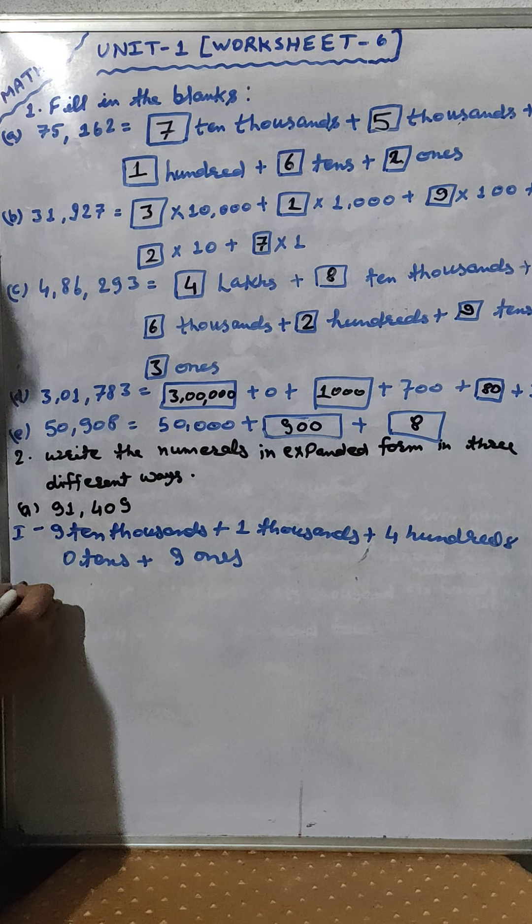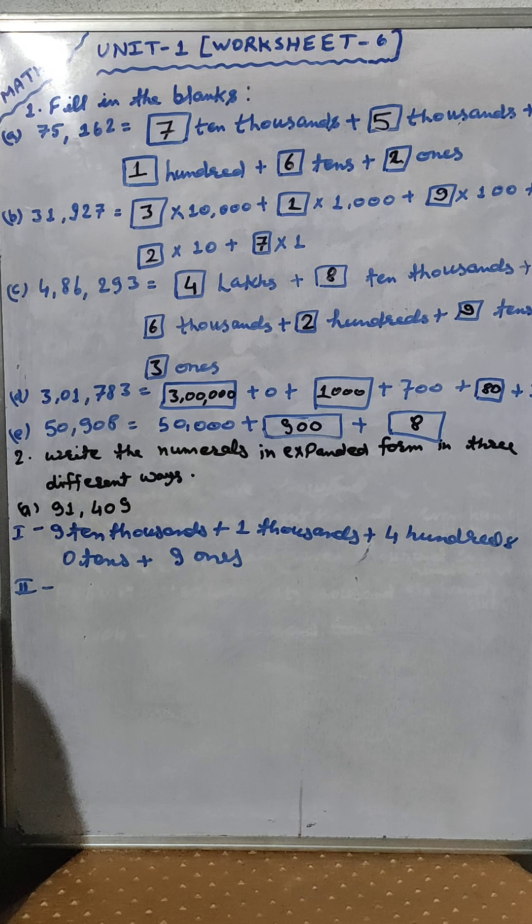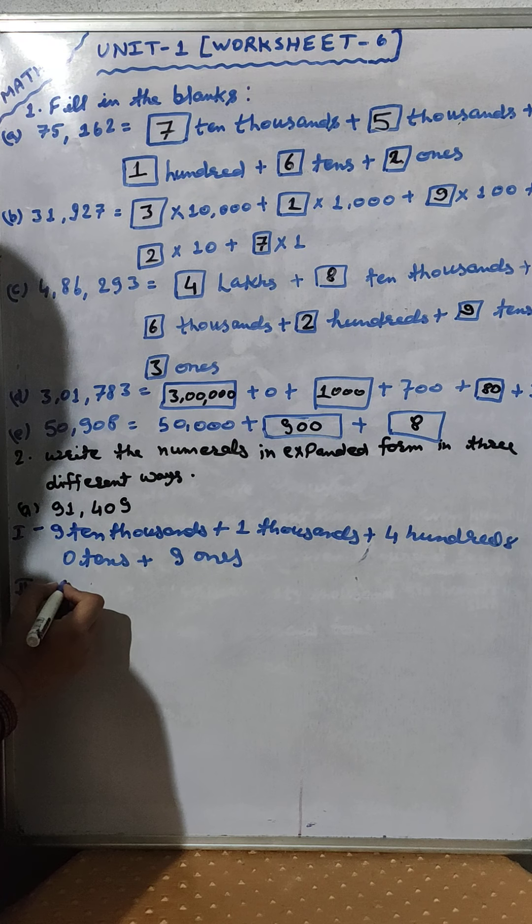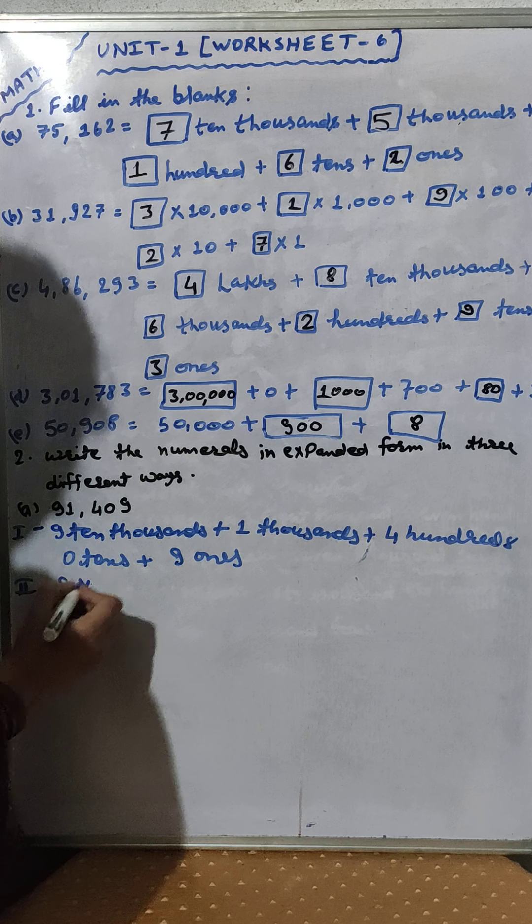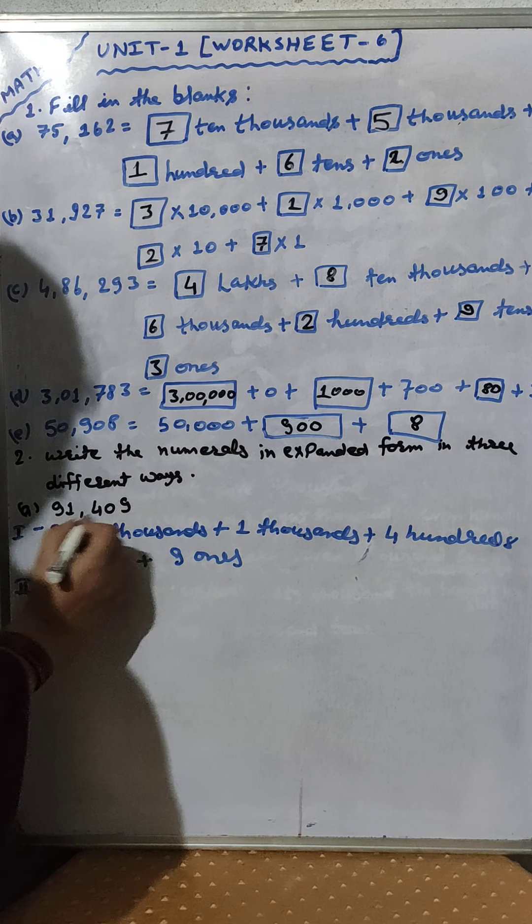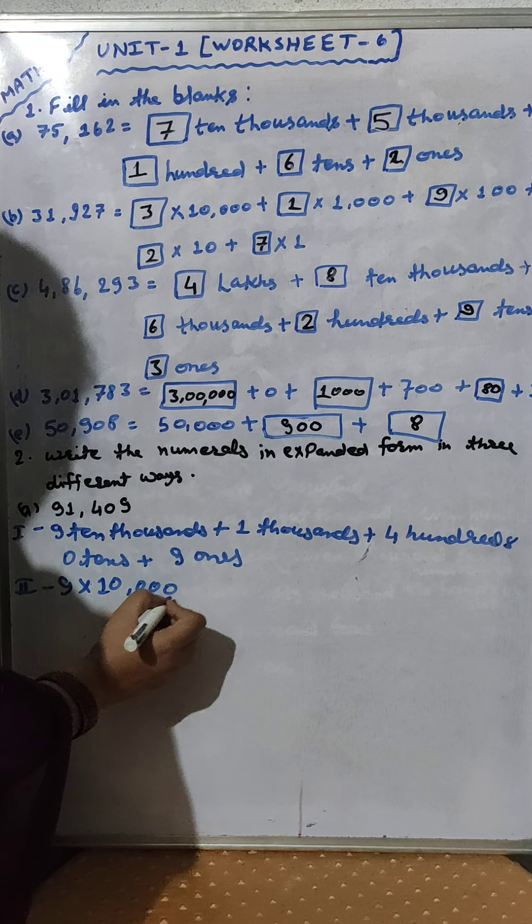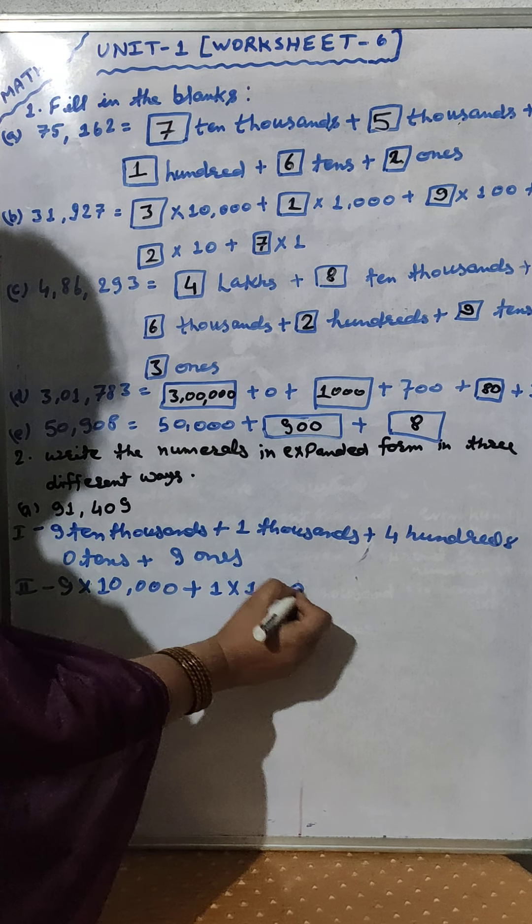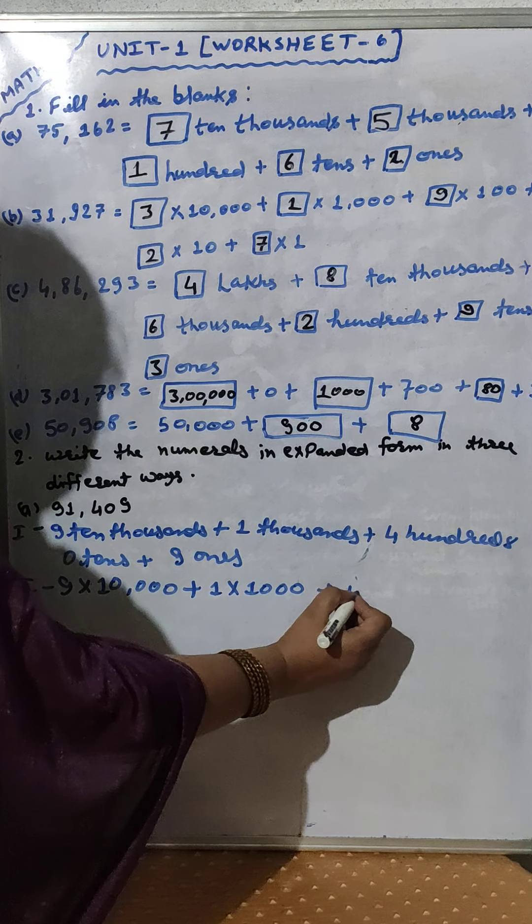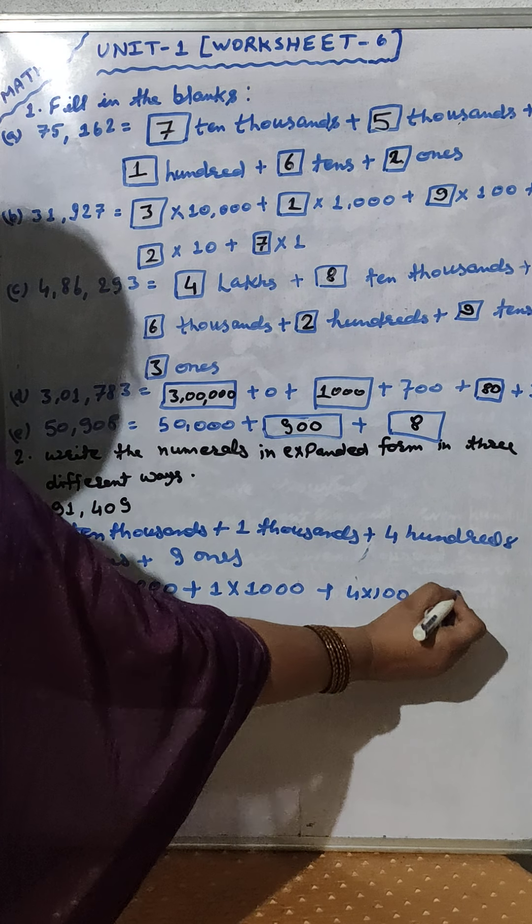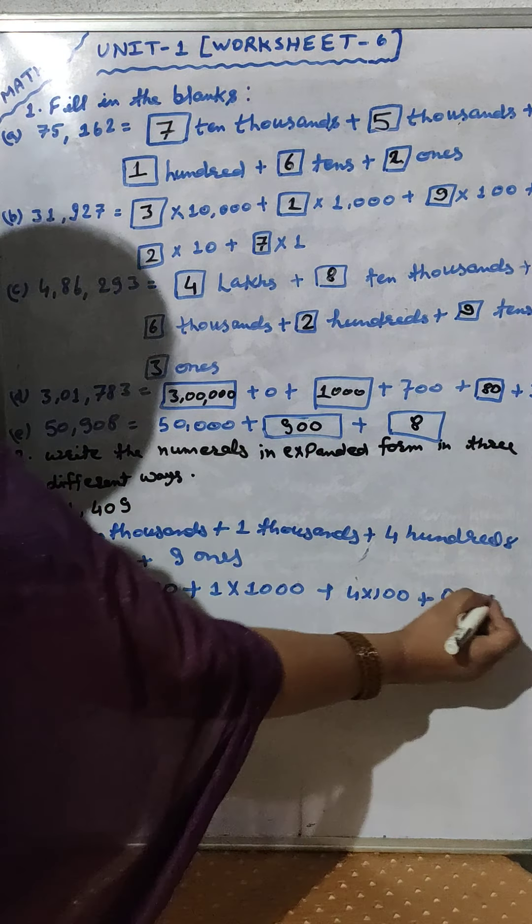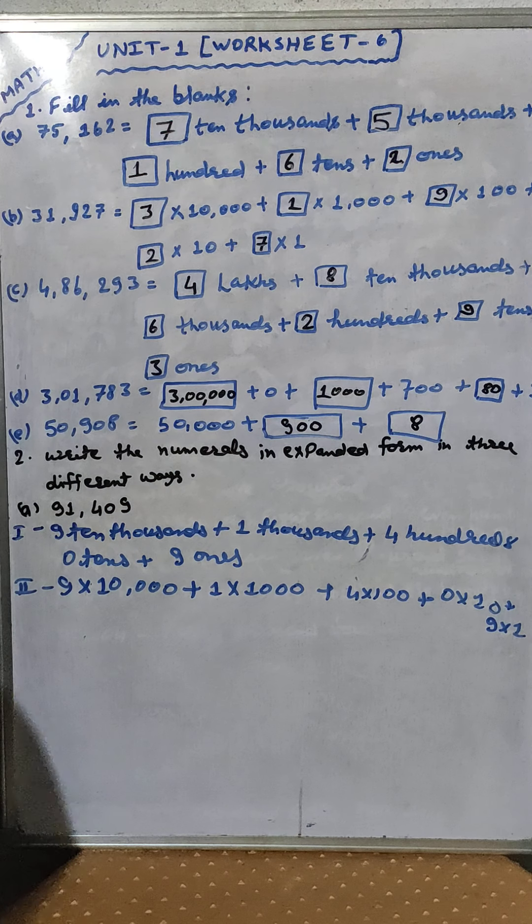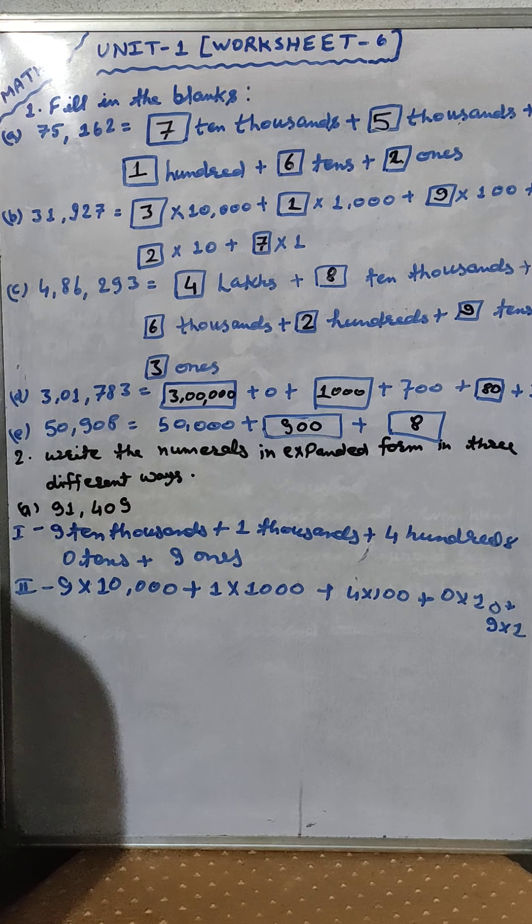Now we will write second step: 9 into 10,000 because there are 4 digits after 9. Plus 1 into 1000, plus 4 into 100, plus 0 into 10, plus 9 into 1. This is second step.